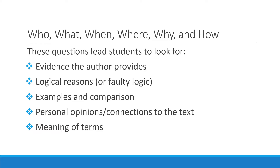What you see from these simple examples is that who, what, when, where, why, and how questions lead students to look for very specific information once they move into the second stage — active reading. These questions lead students to look for evidence the author provides, logical reasons, or even identifying faulty logic in the author's argument, examples and comparisons. They also encourage students to form personal opinions or connections to the text and, of course, figure out the meaning of terms.